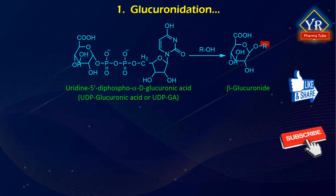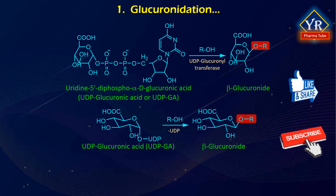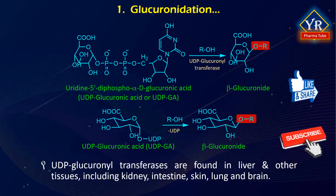These reactions are catalyzed by microsomal enzymes called UDP glucuronosyltransferases and they require a cofactor known as uridine 5-diphospho-alpha-D-glucuronic acid, abbreviated as UDPGA or uridine diphosphate glucuronic acid. These enzymes are found in the liver but also occur in many other tissues including kidney, intestine, skin, lung and brain.